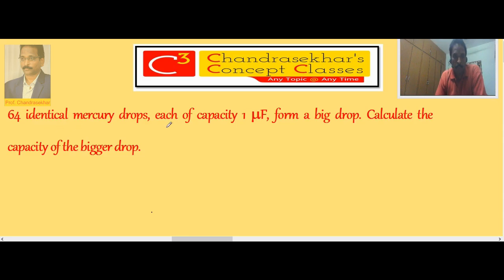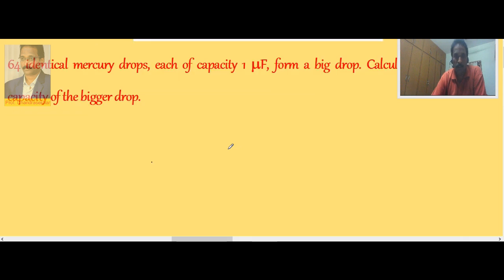64 identical mercury drops, each of capacity 1 microfarad, form a big drop. Calculate the capacity of the bigger drop. Here small drops are combining to form the big drop. Once the small drops combine, we know that the radius of the bigger drop is equal to n to the power of 1/3 into radius of the small drop.